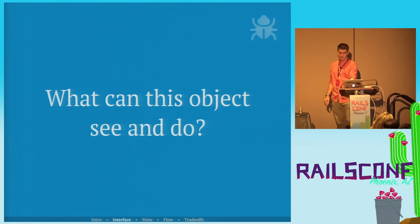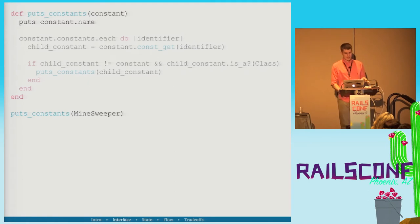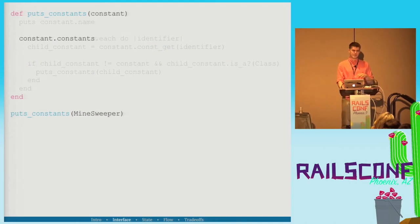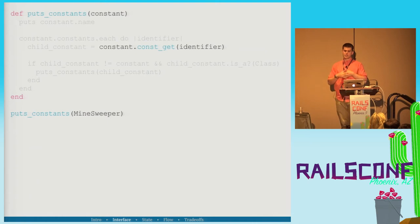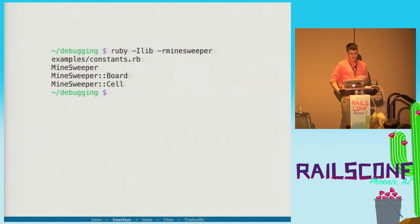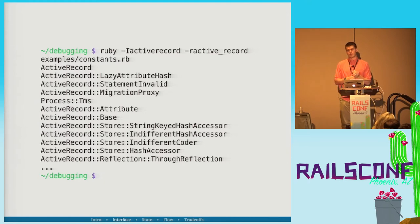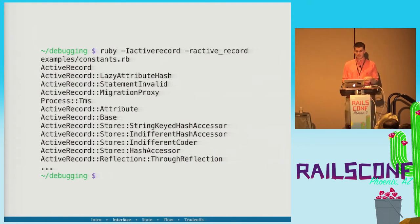What can this object see and do? There are all kinds of introspection tools readily available. A couple lines of code can tell you every single constant defined in a project. We can print the constant name, call .constants on modules, iterate through them, call const_get to get an object by symbol, then iterate recursively. You can run it on ActiveRecord and get every single ActiveRecord constant — very useful for reloading issues like hot reloading with Rails where STI descendant classes haven't been loaded.